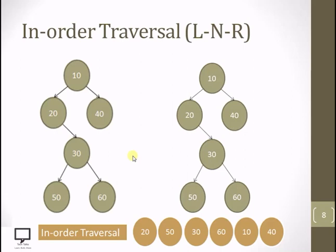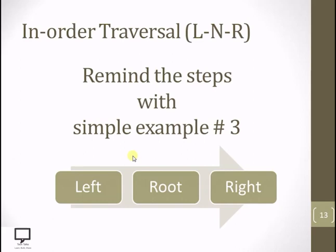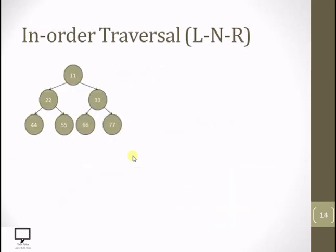I hope you can understand how to traverse the tree with the second solved example. Now let's move forward for the third solved example with steps left, root, right. Here I have given a complete binary tree. You can pause this video, solve it by yourself, then resume to check whether you get the correct result.